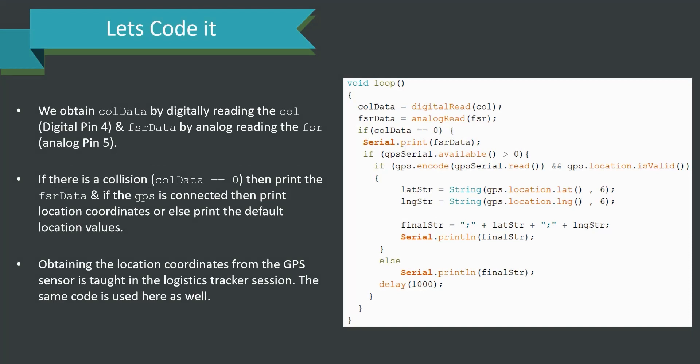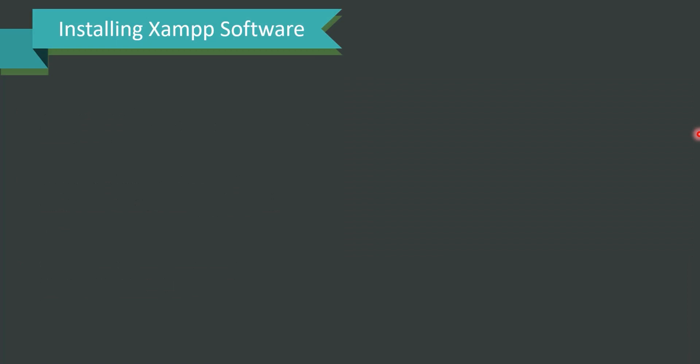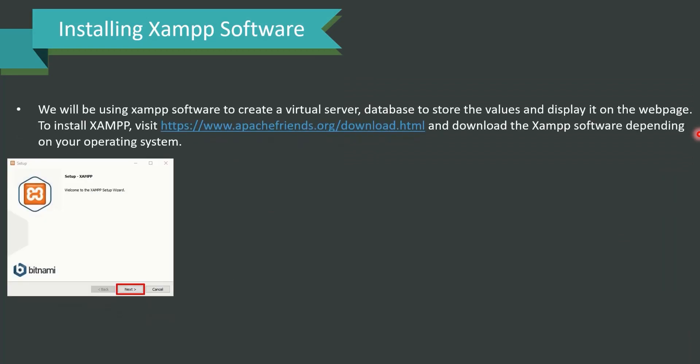We obtain the collision data by digitally reading digital pin 4 and FSR data by analog reading analog pin A5. If there is a collision — that is, if collision data equals 0 — then the FSR data is printed, and if the GPS is connected, the location coordinates are printed; otherwise the default location values are printed. GPS location retrieval was covered in the logistics tracker session — please review it if needed.